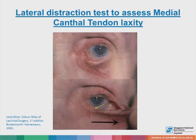The lateral distraction test assesses medial canthal tendon laxity. As demonstrated here, there is punctal ectropion and medial laxity. By pulling the skin laterally, you can see displacement of the punctum from its original position. Normally, when medial laxity is absent, the punctum does not distract beyond the limbus. But once the punctum goes beyond the limbus — as demonstrated by the vertical line drawn through the medial limbus — that indicates presence of medial canthal tendon laxity.